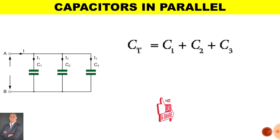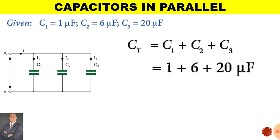If the values of the capacitors are 1, 6 and 20 microfarad we would add them together and the total capacitance would be 27 microfarad.